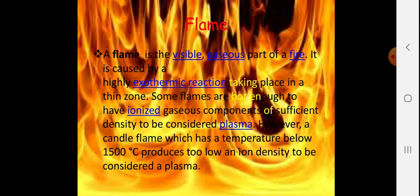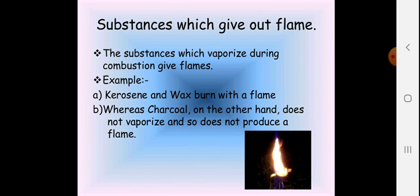A flame is a visible gaseous part of a fire, caused by highly exothermic reactions taking place in a thin zone. Some flames are hot enough to have ionized gaseous components of sufficient density to be considered plasma. However, a candle flame, which has a temperature below 1500 degrees Celsius, produces too low an ion density to be considered plasma. Substances which vaporize during combustion give a flame — for example, kerosene and wax burn with a flame, whereas charcoal does not vaporize and so does not produce a flame.